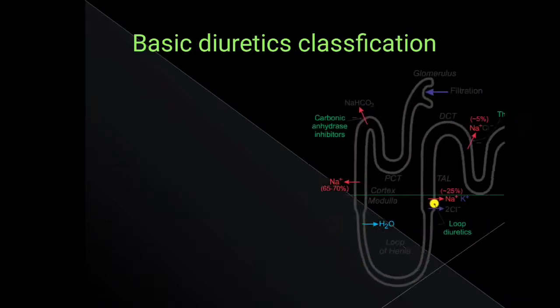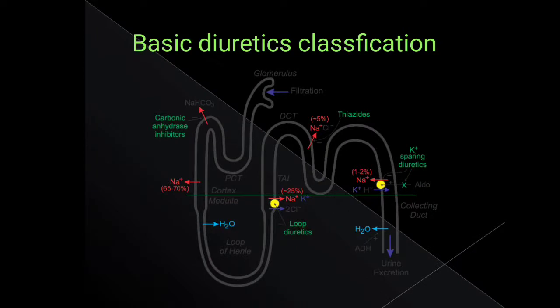Basic diuretic classification. You should learn the basic diuretic classification for the AKU test and other tests, because diuretics are a major and important topic for test preparation and from an interview point of view. The most important classifications, as you can see in the picture, are carbonic anhydrase inhibitors, thiazides, potassium-sparing, and loop diuretics. Side effects are also visualized here.